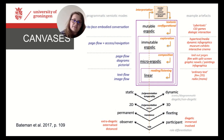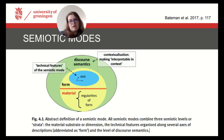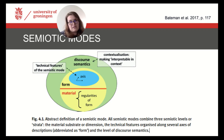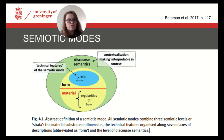On the basis of this characterization and categorization, we can then also describe the semiotic modes of each communicative situation, and we do this on the basis of a complex definition. Every semiotic mode combines three semiotic levels: the material dimension, the technical features organized along several axes of description — described as form — and the level of disco-semantics. Since this definition is rather abstract and very complex, it is always good to look at concrete examples and to be reminded of the case studies discussed in the previous lectures.